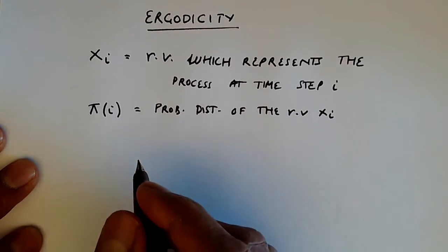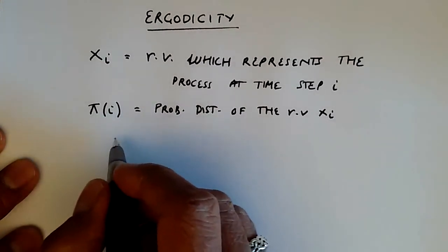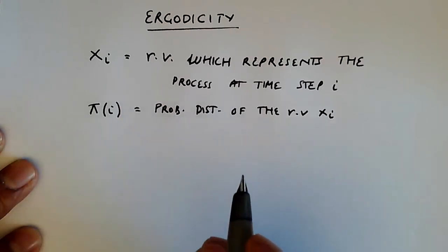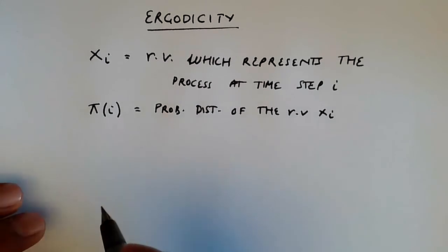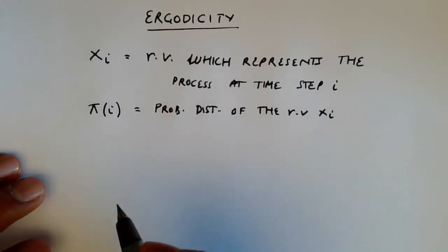And intuitively, it would be nice if we had a Markov process or a chain where, as i became larger, pi, the probability distribution, attained some kind of stability. It was going to be constant.